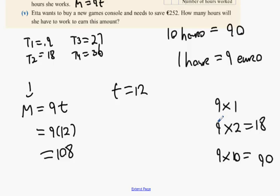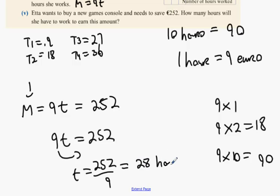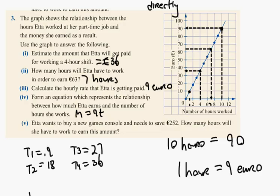Etta wants to buy a new games console and needs to save €252. How many hours will she have to work to earn this amount? She has to work so many hours that it equals 252. What do we do with the nine? When we bring the nine to the other side, divide by nine. So t = 252 ÷ 9. You need to work 28 hours to get that money.